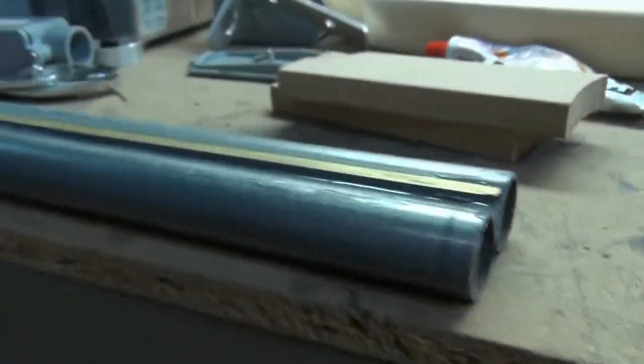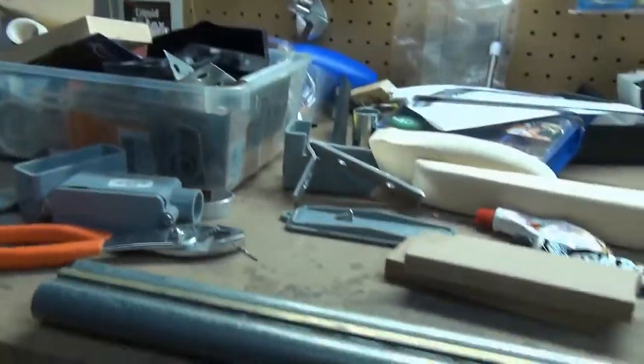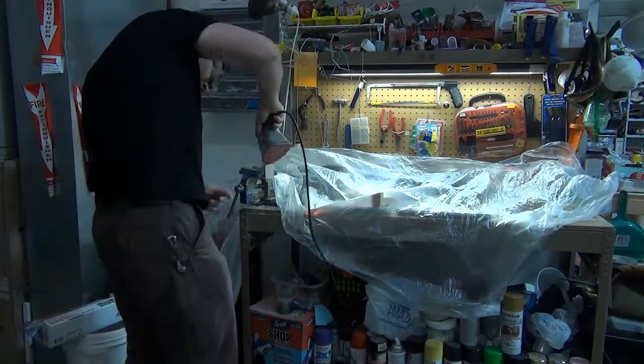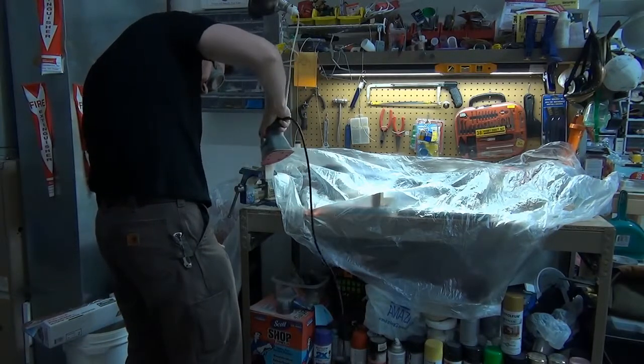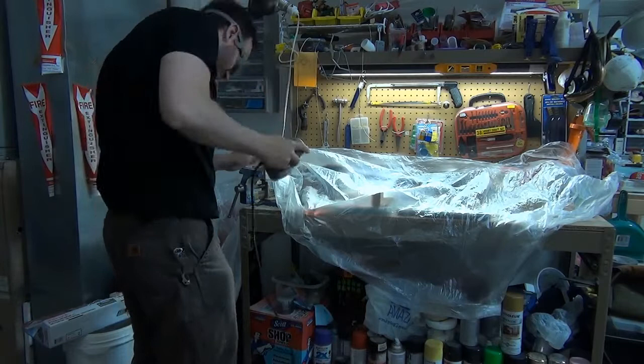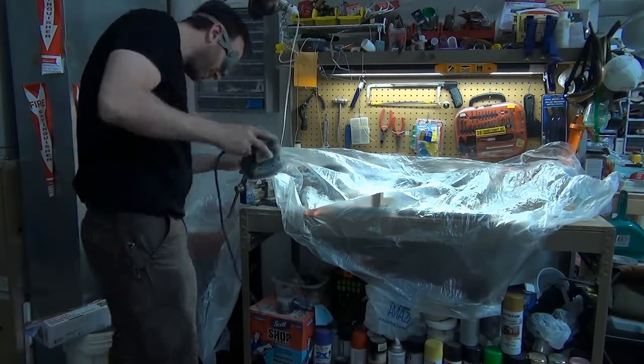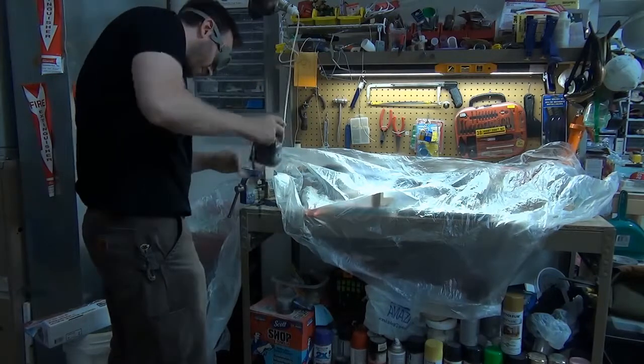And then I would put another thin bead, kind of smooth it out. But yeah, then once that cures, I cut out the handle and the wood pieces, the handle itself and then the forward grip. I cut it out of a piece of 2x4 and just sanded the hell out of it.